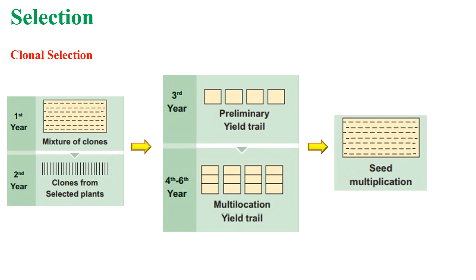During the first year of clonal selection, a few plants are selected from a mixture of clones. During the second year, clones from the selected plants are grown separately and desirable clones are selected. Preliminary yield trial starts in the third year, and multi-location yield trials begin from the fourth to sixth year. The best clone will be identified in the seventh year and released as a new variety.